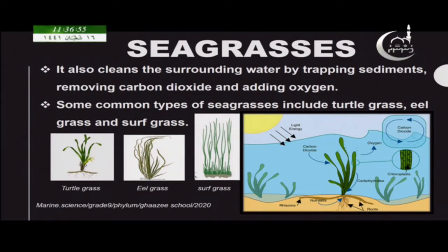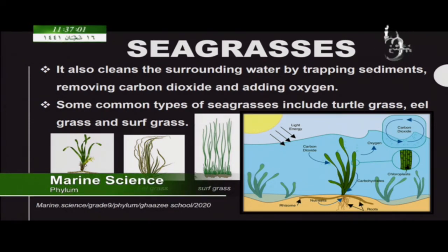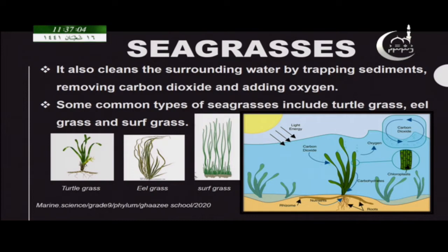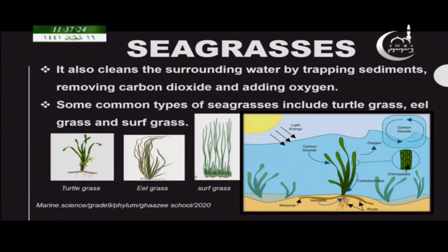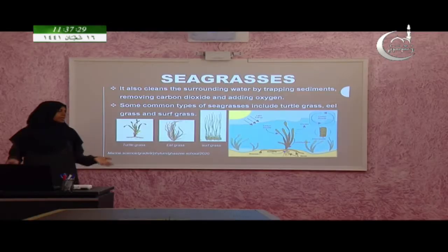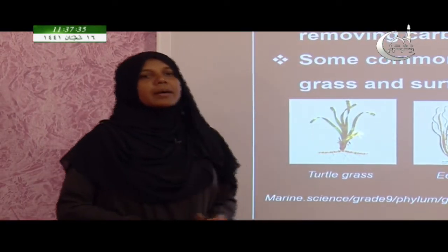Seagrasses are very helpful to us. They trap sediments, take in carbon dioxide for photosynthesis, and release lots of oxygen — helping the organisms living around them and providing food for many organisms. Some examples of seagrasses include turtle grass, eel grass, and surf grass. In the Maldives, you find lots of seagrass beds around the islands as well.